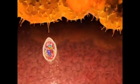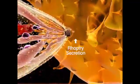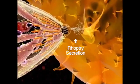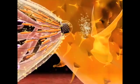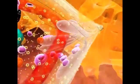When a target cell is found, as this macrophage, the tachyzoite adheres to it and starts to secrete the contents of the rhoptries, that we see here as white bubbles. This modifies the properties of the plasma membrane of the host cell, which becomes receptive to invasion.